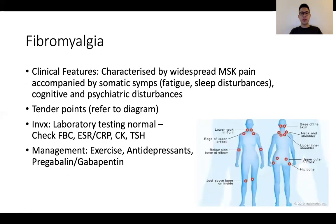The last condition is fibromyalgia, characterized by widespread musculoskeletal pain, associated sometimes with somatic symptoms such as fatigue and sleep disturbances, with or without cognitive or psychiatric disturbances. This diagram shows the various trigger points associated with fibromyalgia. Laboratory testing is usually fairly unremarkable. Treatment begins with non-pharmacological management such as exercises, antidepressants, and pregabalin and gabapentin have also shown to be effective.